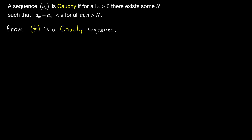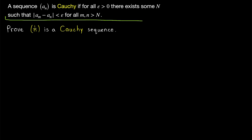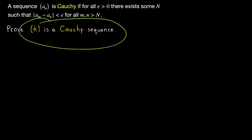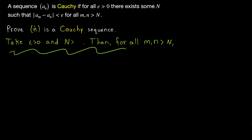We're going to prove that the sequence of reciprocals of natural numbers, 1 over n, is a Cauchy sequence. The idea of a Cauchy sequence is that the terms of the sequence get arbitrarily close together as you go further and further along in the sequence. This definition has some similarity to the standard definition of the limit of a sequence, and we can set up a proof that a sequence is Cauchy in a similar way. We can begin with our Cauchy sequence proof framework and then fill it in.